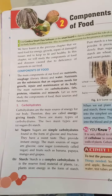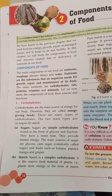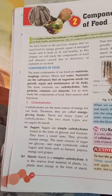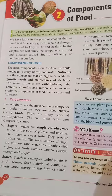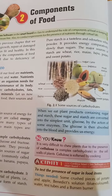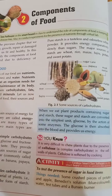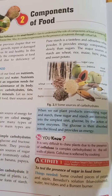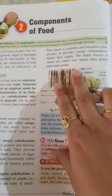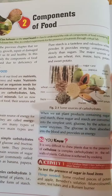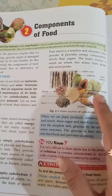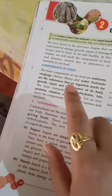Starch is a complex carbohydrate and is the reserve food material present in plants. During photosynthesis, plants make food in the form of glucose, which is afterward converted into starch. Pure starch is tasteless and odorless. It provides energy, though comparatively less than sugar. The major sources of starch are rice, maize, bajra, potato, and sweet potato.